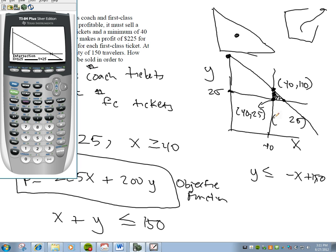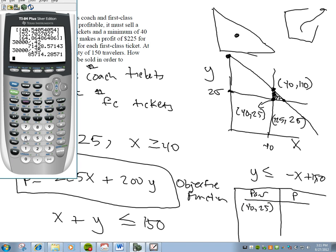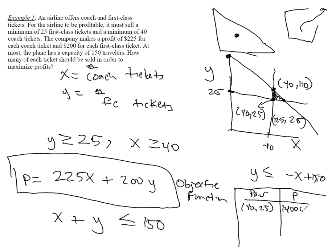Now I'm going to go ahead and test all these points. So I want to see which one produces the biggest objective function value. So here's my profit, here's my pair. So if my pair is 40, 25, I need to check to see when x is 40, y is 25, to see what my profit's going to be. So I'm going to be doing 225 times 40 plus 200 times 25, and that gives me a profit of $14,000. So I'll come over here and type in 14,000.